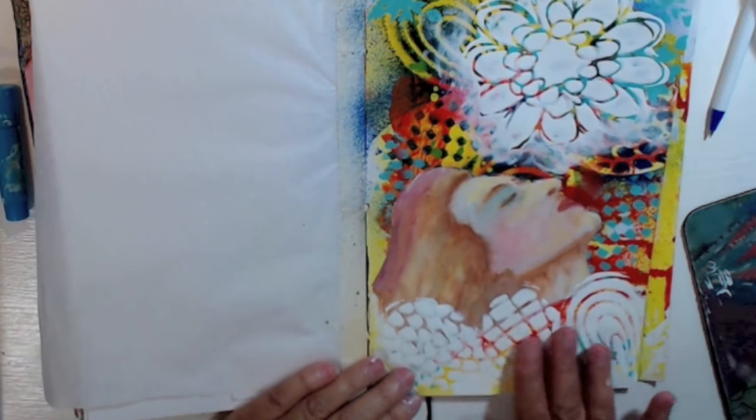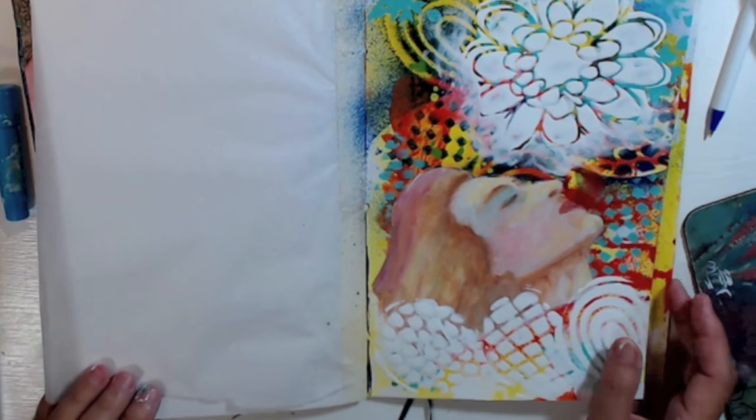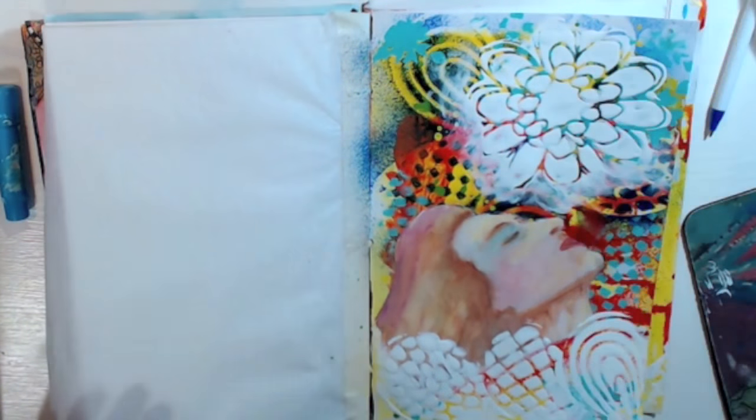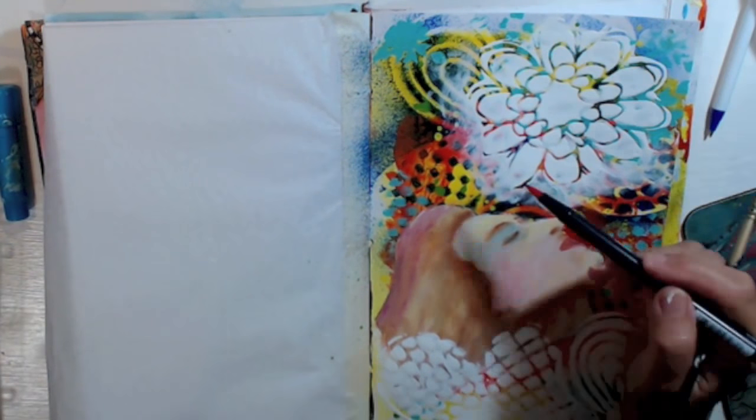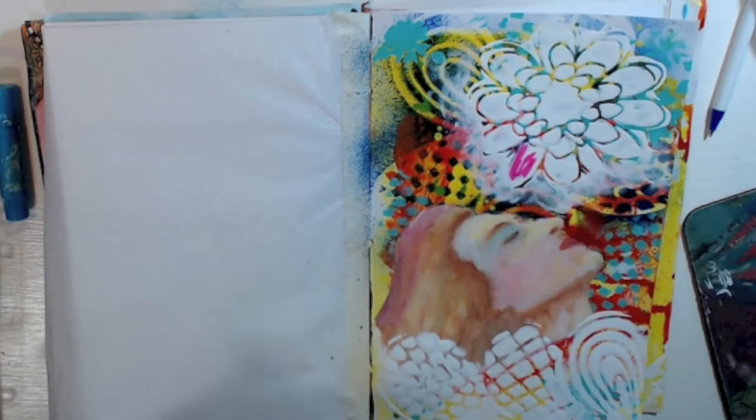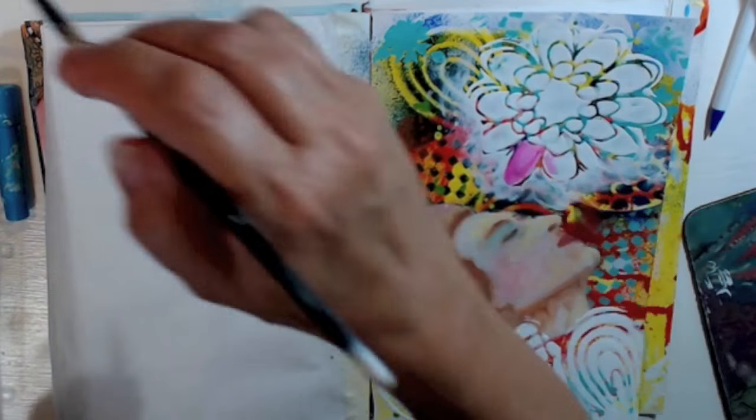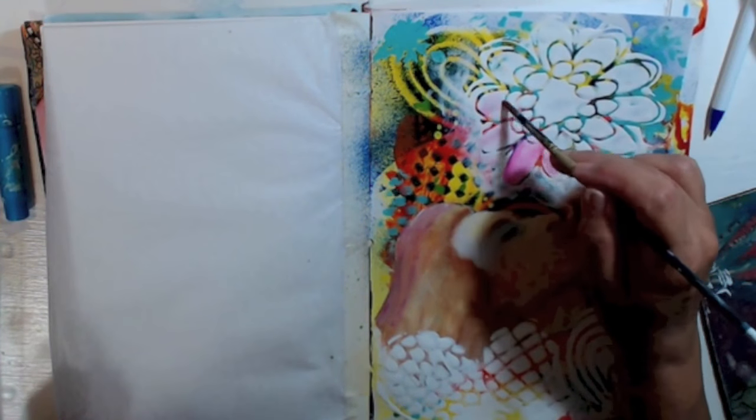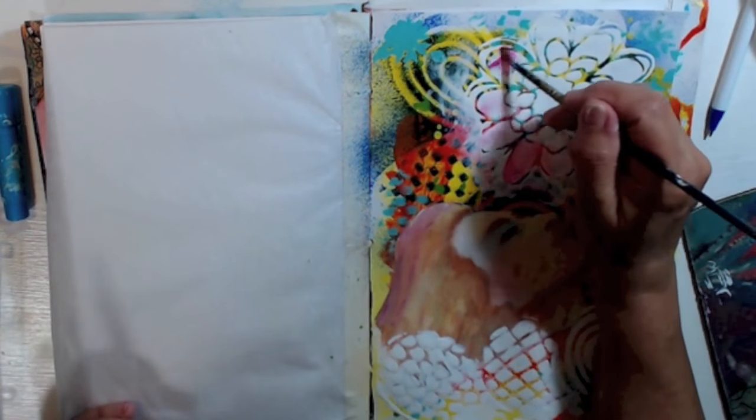I was working on her face and I added some stencils using gesso, and now I'm going to paint over them. This is the sun, so I'm going to add some hot colors in here. I'm using my Tombow markers, I don't use them that often, but I'm just gonna try and add a little bit of pink in here.